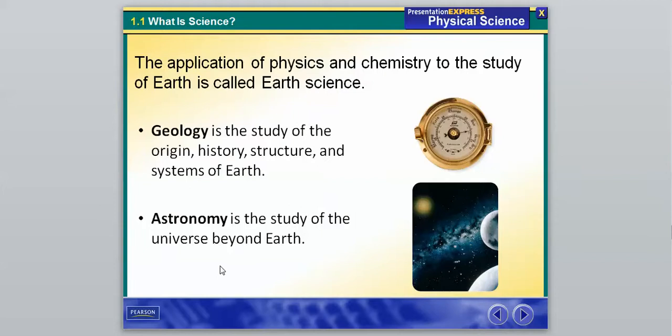And so our next branch is earth science, and this is the application of physics and chemistry to the study of the earth. We have kind of two main branches within earth science. We have geology, which is the study of the origin, history, structure, and systems of earth. So basically a lot of people just think geologists maybe look at rocks, but it's basically how the earth is formed and kind of how it came to be how it is today. And there's a lot more than geology that goes into the rocks. They do give us a lot of details, but they might take a look even at volcanoes, earthquakes, any natural disasters that might occur.